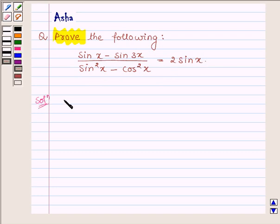So let us start with the solution and we will solve the left hand side of this problem and show that it is equal to 2 sin x. So left hand side is sin x minus sin 3x upon sin square x minus cos square x.